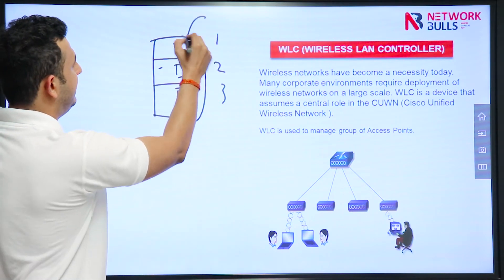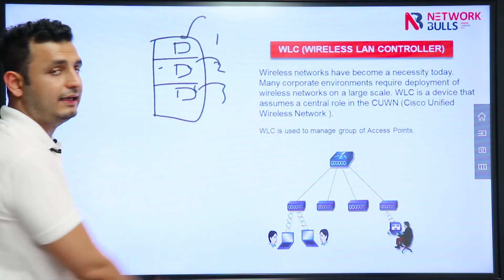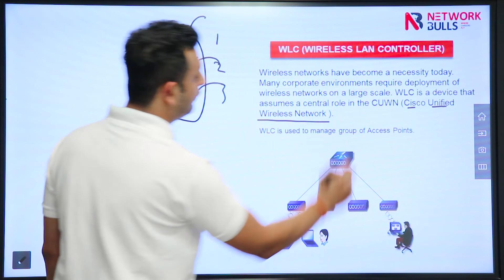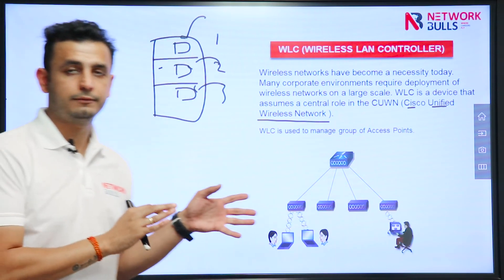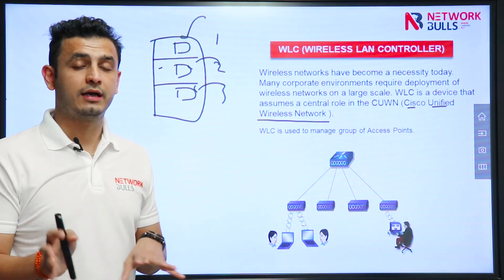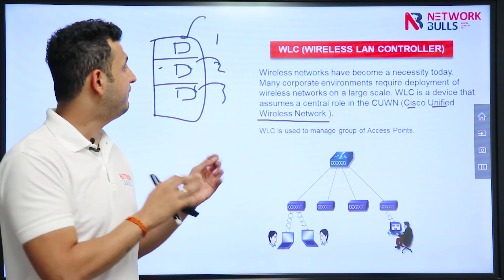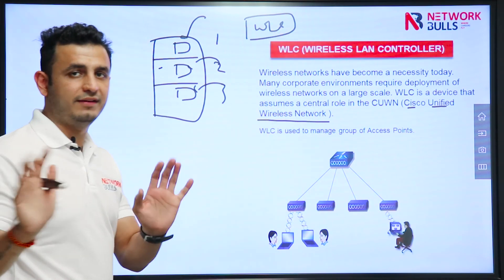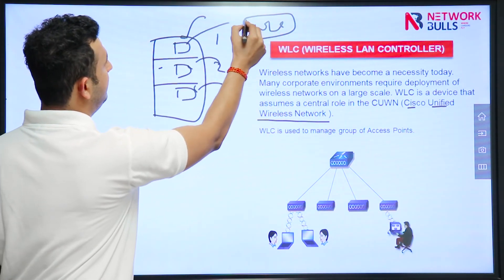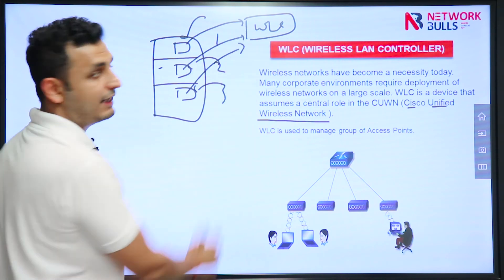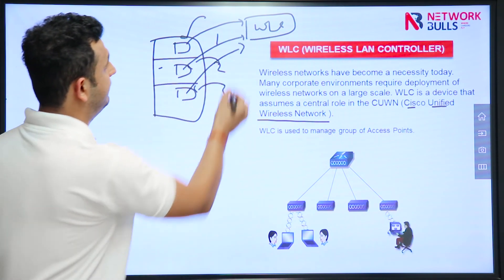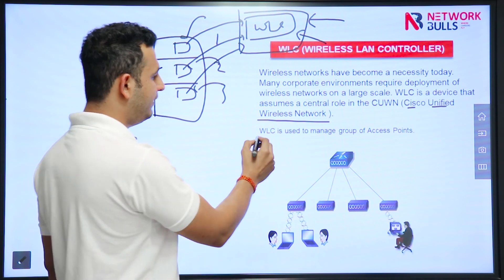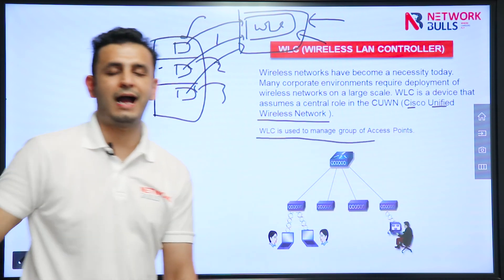Now I have to manage this AP, this AP, and this AP separately. But with the help of Cisco Unified Wireless Network — a solution given by Cisco for wireless networks — if we are using this solution, we can use a WLC and just once we have to register these APs to this WLC. Now I can manage all these APs from a centralized location, that is called WLC. So WLC is used to manage a group of access points.